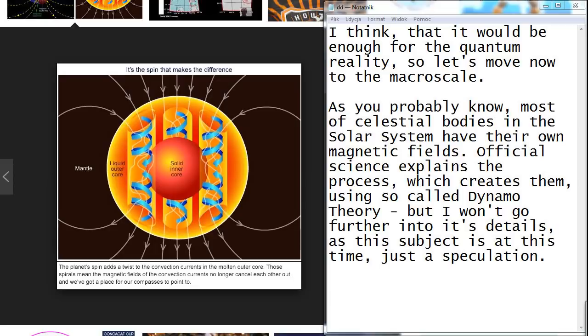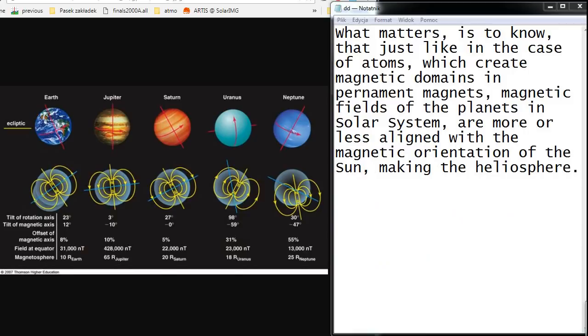As you probably know, most of celestial bodies in the solar system have their own magnetic fields. Official science explains the process which creates them using so-called dynamo theory. But I won't go further into its details, as this subject is at this time just a speculation. What matters is to know that just like in the case of atoms which create magnetic domains in permanent magnets, magnetic fields of the planets in solar system are more or less aligned with the magnetic orientation of the sun, making the heliosphere.